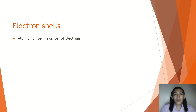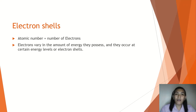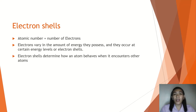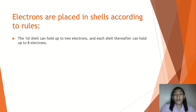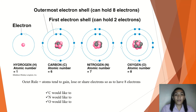Remember that when you see the atomic number, it actually gives you the number of electrons. Electrons vary in the amount of energy they possess and they occur at certain energy levels or electron shells. These electron shells tell you how your atom would behave when it encounters another atom. Electrons are placed in shells according to rules. The first shell can hold only up to two electrons, and each shell after that can hold up to eight electrons. This rule is known as the octet rule.